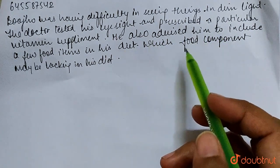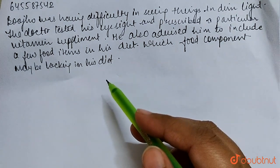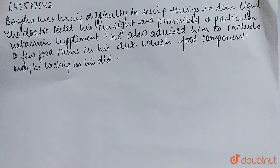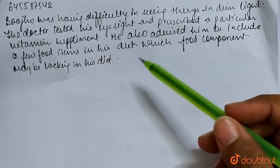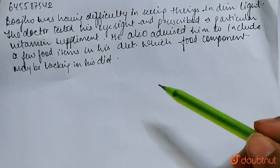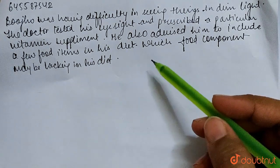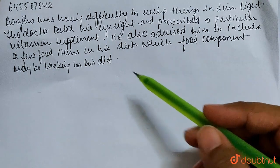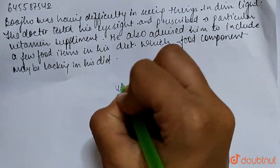Which food component may be lacking in this diet? Here we are talking about a person who was looking at dim light. The doctor tested his eyesight and prescribed some vitamins, and advised him to include some food items in his diet.